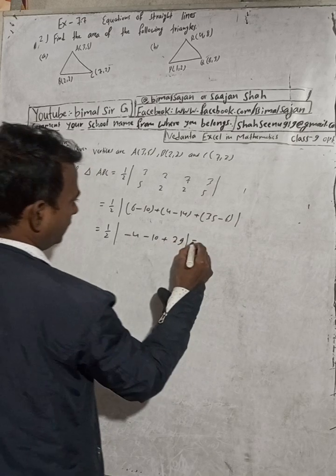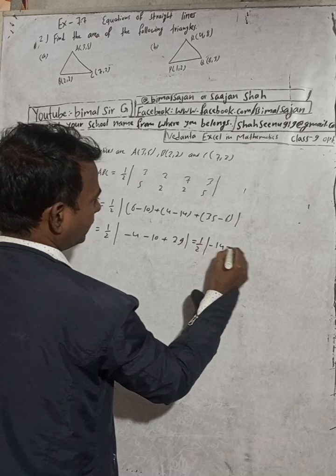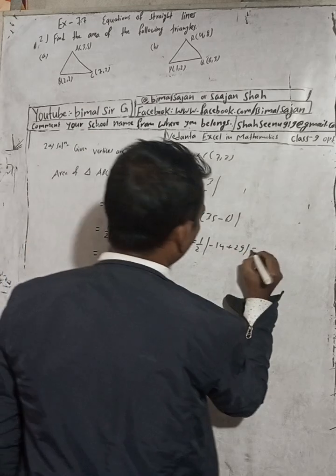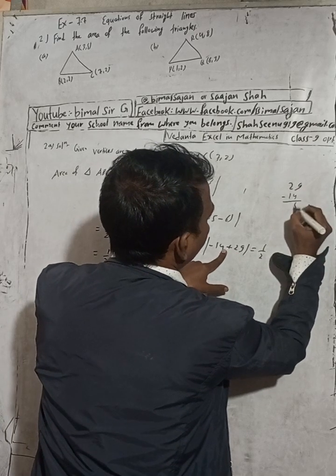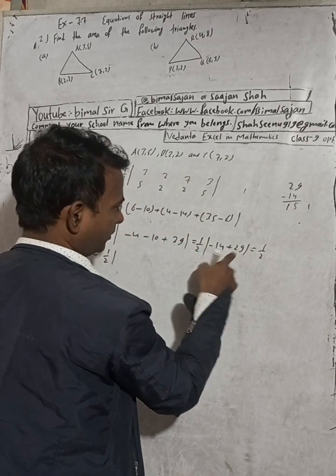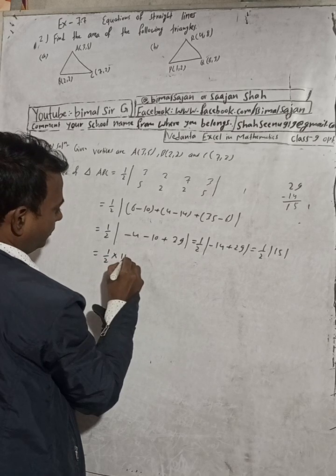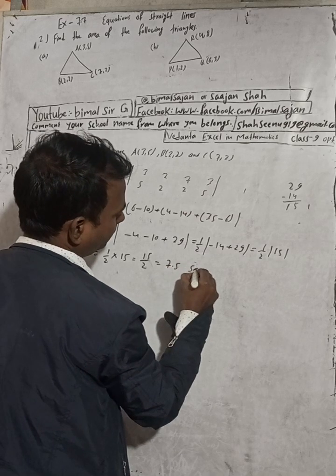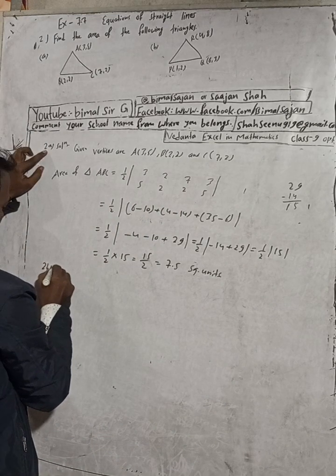Now you can see this is minus 14 and plus 29, so when I subtract, 29 minus 14 is 15. This will be plus 15 because the larger number is positive. So we can write it as 1/2 into 15, which equals 15/2, which is equal to 7.5 square units.